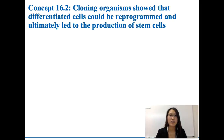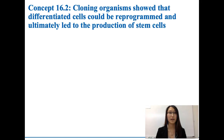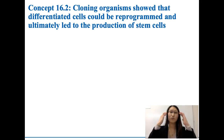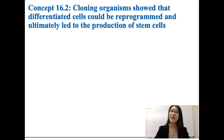Hello everyone. In this video we're going to talk about cloning and stem cells. Cloning organisms showed that differentiating cells could be reprogrammed and ultimately led to the production of stem cells. What that means is that we talk about cells getting differentiated and determined to become a certain type of cell that has a certain structure and function. However, with our increased understanding of how biotechnology could work, now we can actually reprogram some cells that are already differentiated and then produce stem cells on our own. We don't have to use stem cells that were already there.